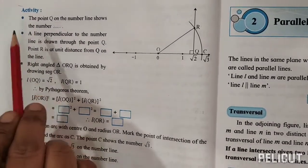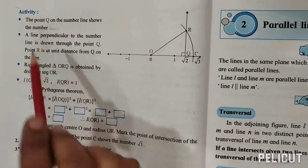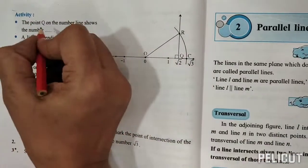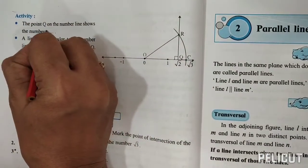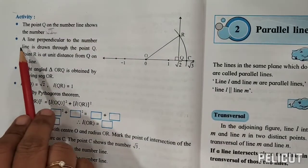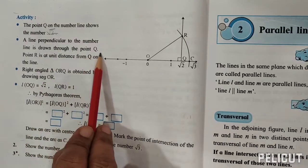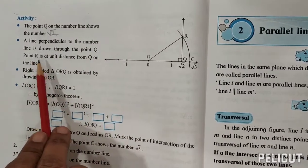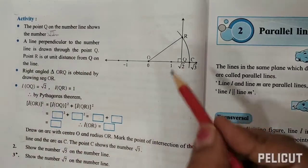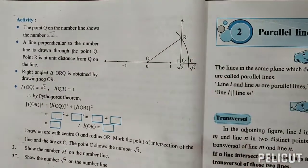Looking at the activity: the point Q on the number line shows the number √2. A line perpendicular to the number line is drawn through point Q. Point R is at unit distance from Q on the number line, so the distance QR is 1 unit.